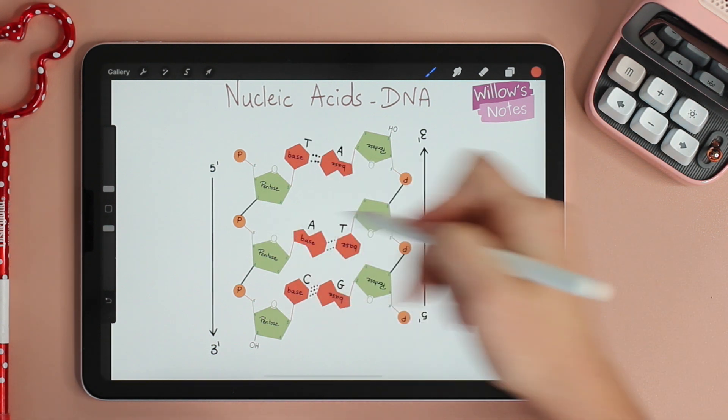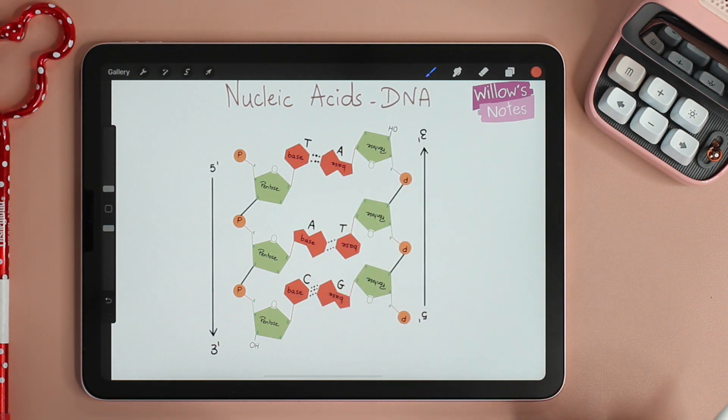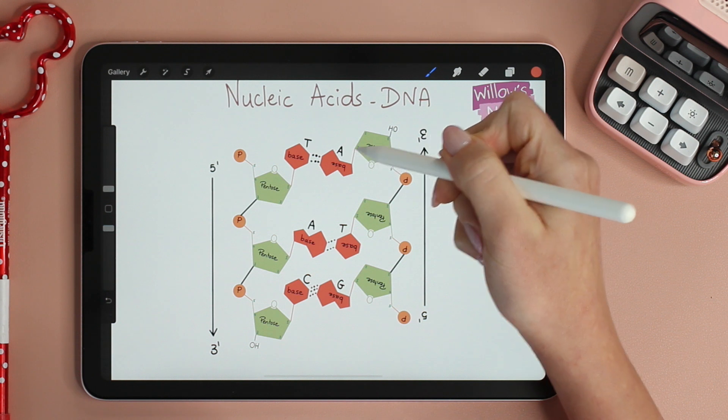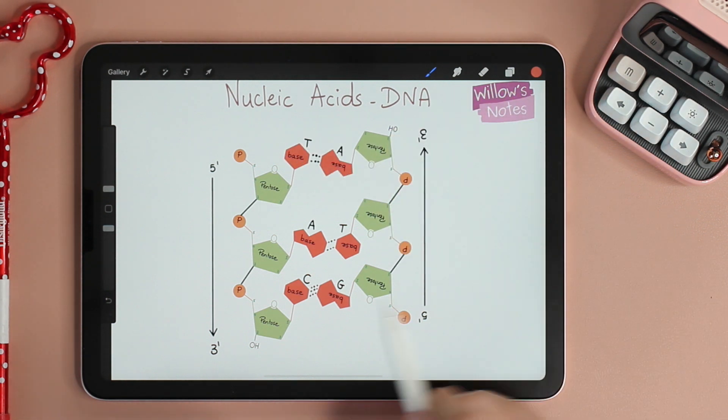Finally, the two strands are held together by the hydrogen bonds between paired bases. A always pairs with T with two hydrogen bonds and C always pairs with G and they have three hydrogen bonds between them.